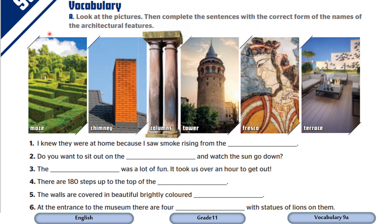Now it's time to open your student books page 130 and do activity number A. Look at the pictures then complete the sentences with the correct form of the names of the architectural features. As you can see, the first picture is maze, this one is chimney, the other one is column, this is tower, fresco, terrace.